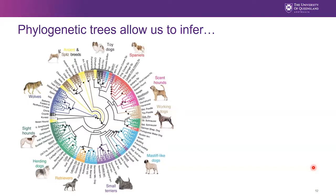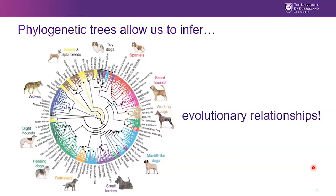They are the same species but different varieties, breeds, or subspecies. In the same way you saw the phylogenetic tree in the last slide, we can organize them this way. All modern-day dogs are derivatives of wolf ancestors. Phylogenetic trees allow us to infer evolutionary relationships.